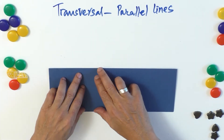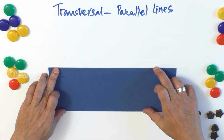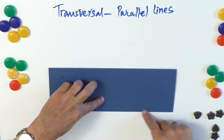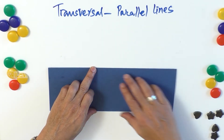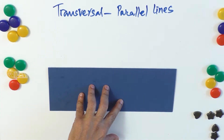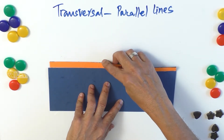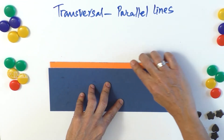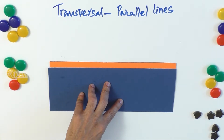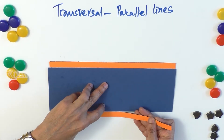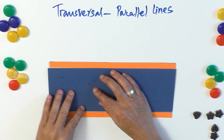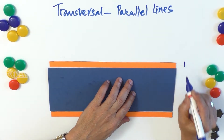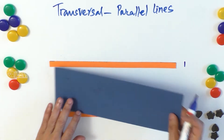First, we need to form parallel lines. I have taken a long rectangle, which means the line on top and the line at the bottom are parallel — these two lines will not meet. Using a magnetic strip, we have a line on top and a line at the bottom of this rectangle, so these are our parallel lines.